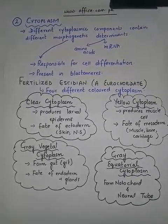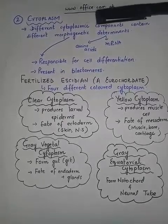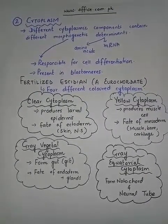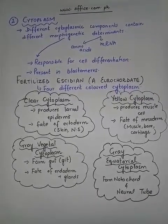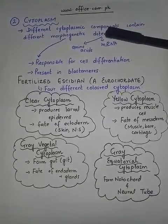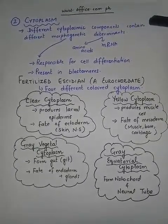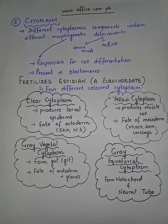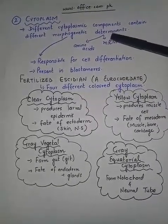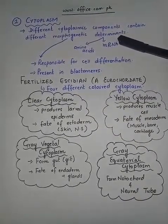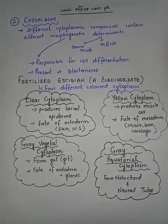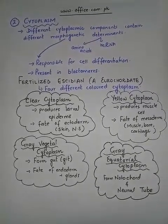Cytoplasm has different cytoplasmic components. These components are known as kappa particles — this is not mentioned in your book, just for your knowledge. These kappa particles contain different morphogenetic determinants, meaning the components which will determine the morphology of the new offspring or new organism.